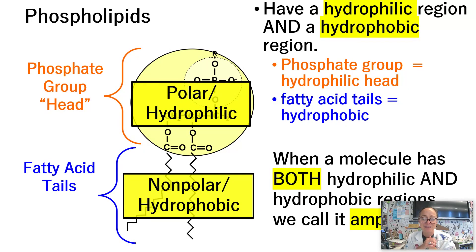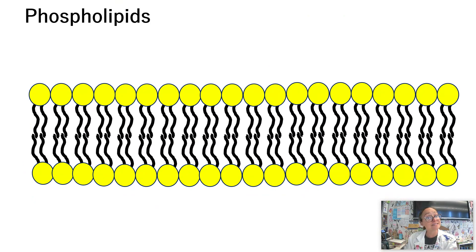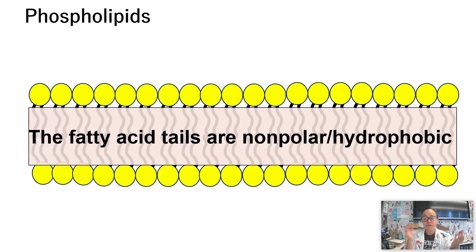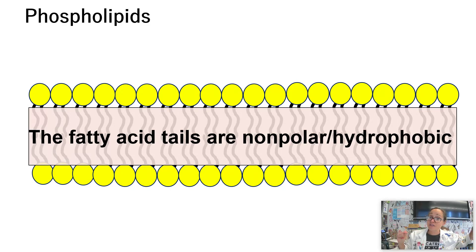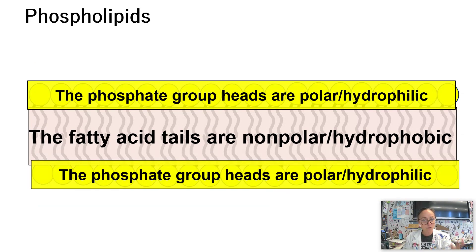This amphipathic property is particularly important when we get into cell membranes. Also worth noting: while lipids are generally made of carbon, hydrogen, and oxygen, phospholipids also contain phosphorus — so if you see a lipid labeled CHO and P, they're referencing phospholipids. Phospholipids make up our cell membranes. Since all cells are surrounded by water — water outside and inside — the polar phosphate group heads interact with the aqueous environment externally and internally, while the fatty acid tails face each other and repel from that watery environment. This is why cell membranes are made of a lipid bilayer.